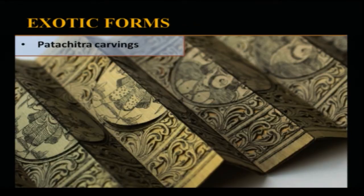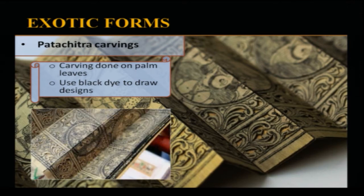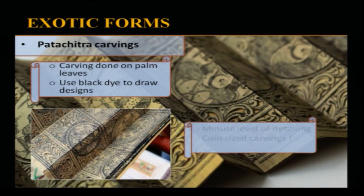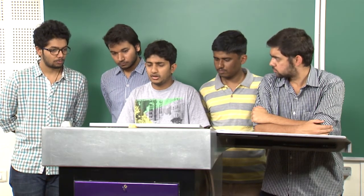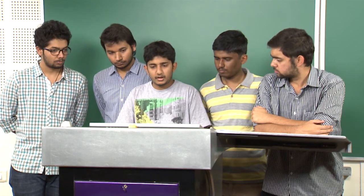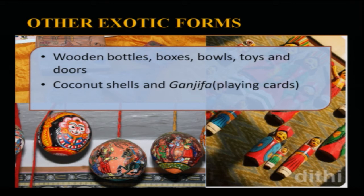Apart from Bengal Pata Chitra paintings, there are also Orissa carvings done on palm leaves. These carvings are very delicate — even a small break means the artist must start from scratch. The detailing is quite fine and a black dye is applied afterwards; these carvings can be even coin-sized. Other forms include painting on wooden bottles, boxes, bowls, toys, wooden doors, coconut shells, Ganjifa playing cards, and Chitra Pothis — painted palm leaves stacked over one another with the help of a stone.